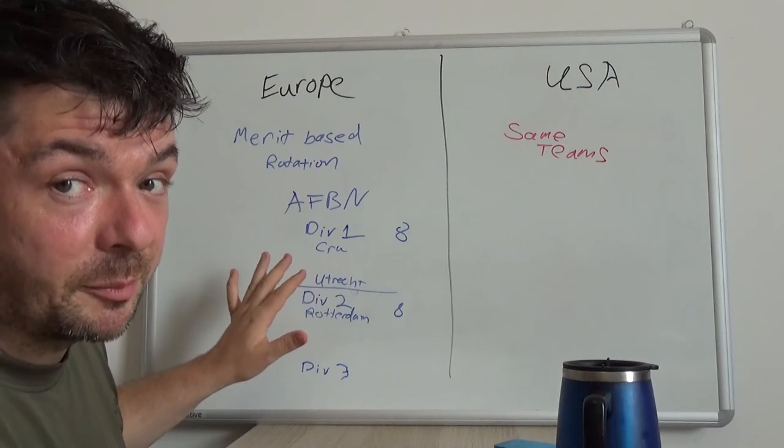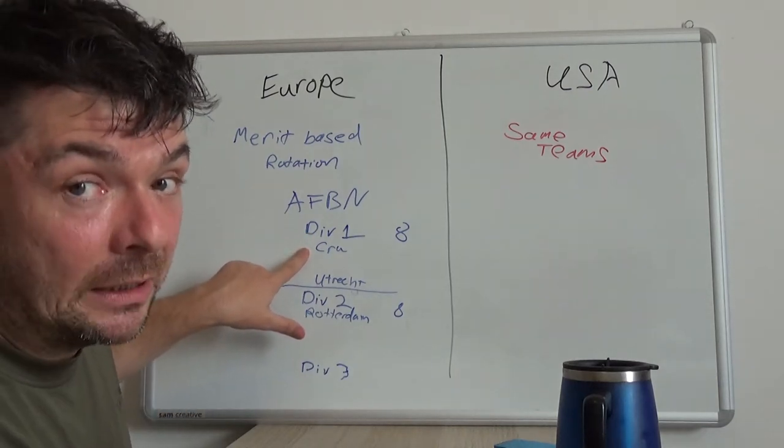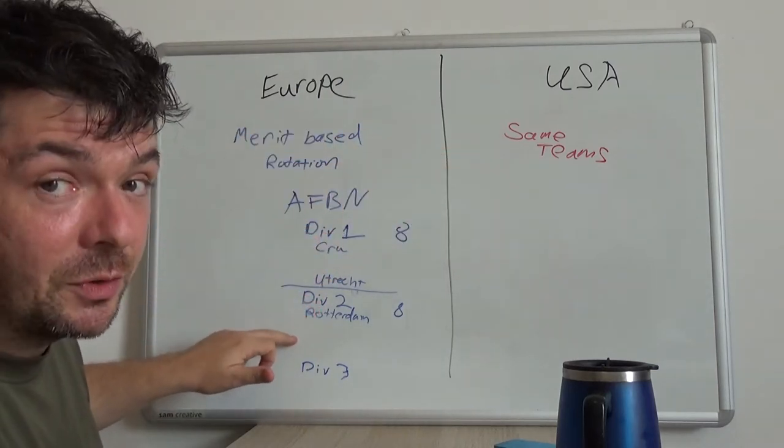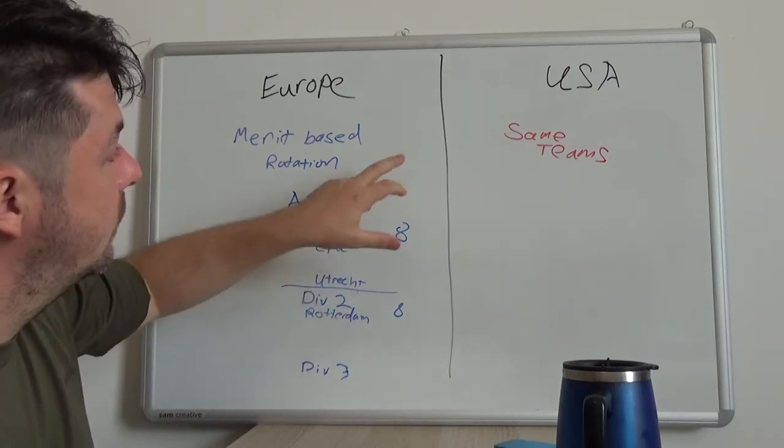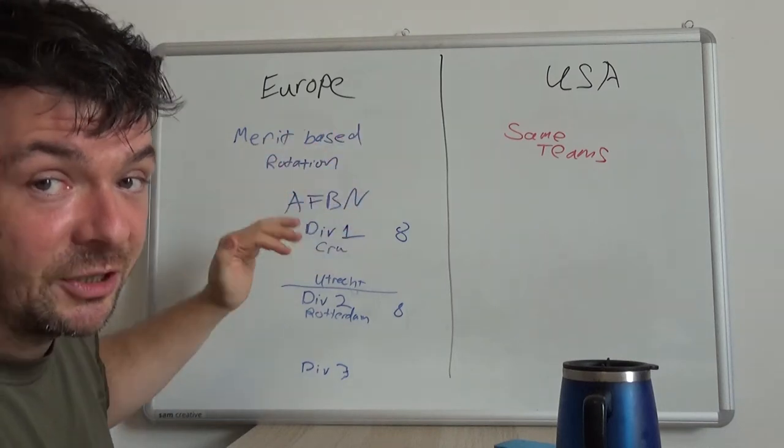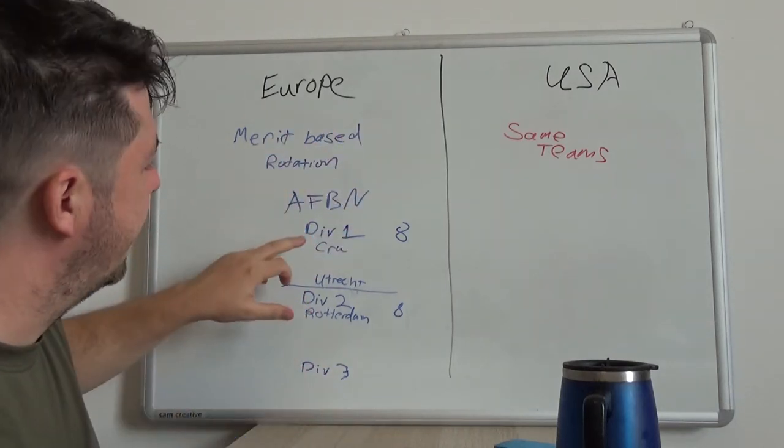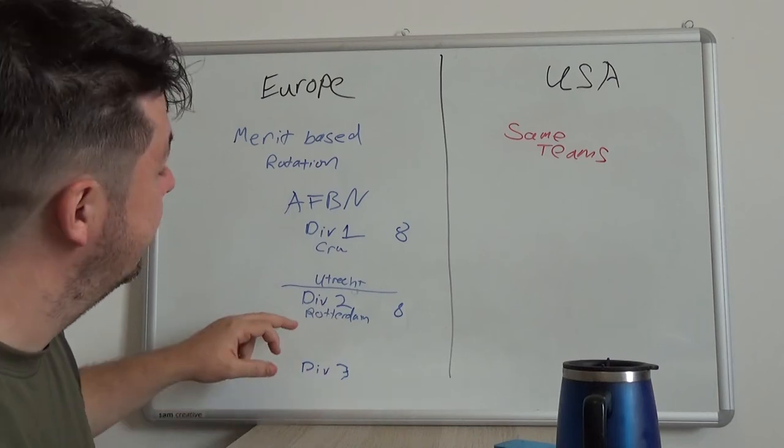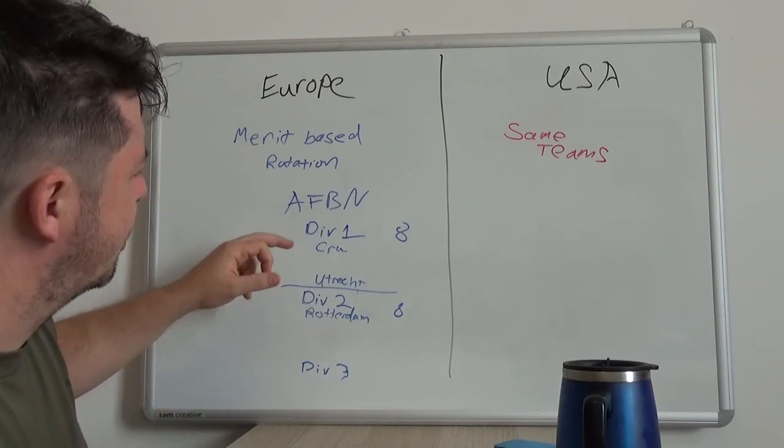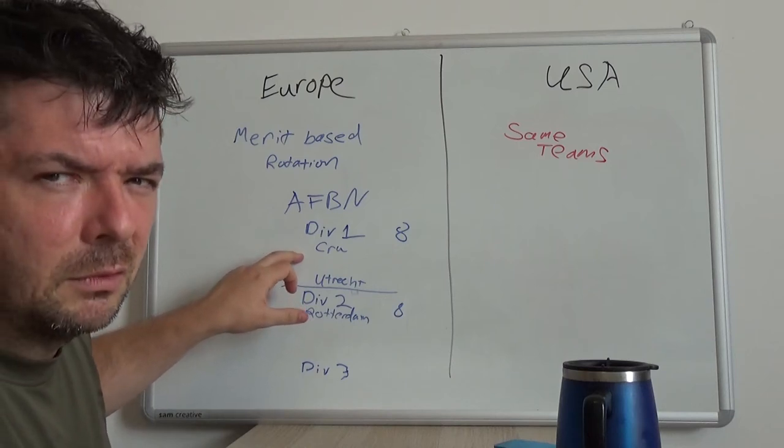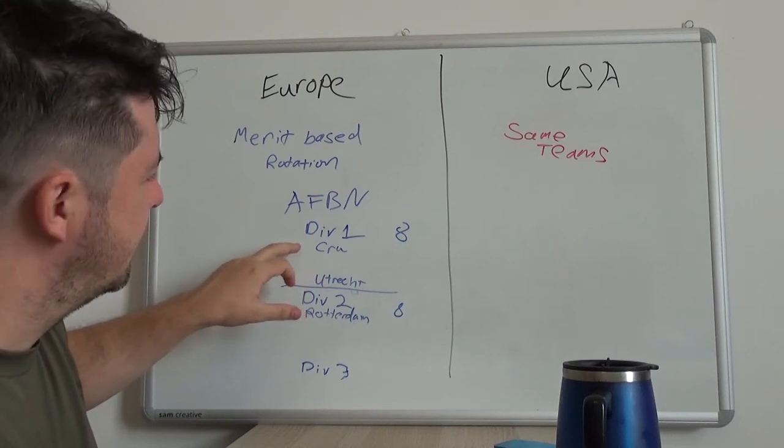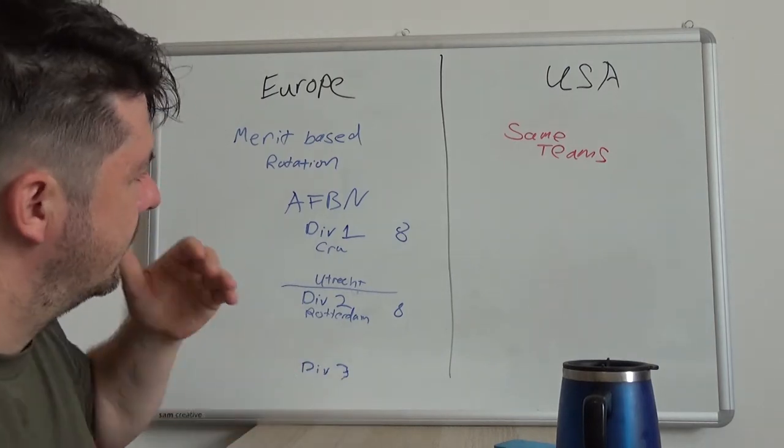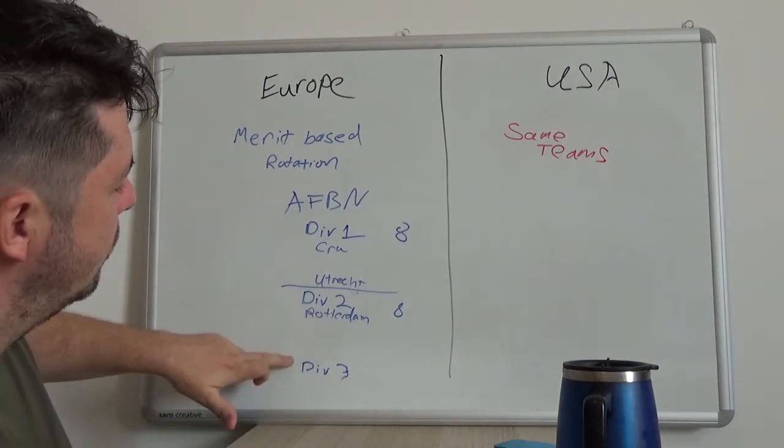The previous year, before I started playing here in the Netherlands, the Crusaders were not actually in division one. They were playing international games around Europe. So they had their second team crew two down in division two who wound up winning division two. But then the crew were basically getting their ass kicked around Europe and decided to come back to just the AFBN. There was a fight that crew one should go down to division two and start there because they're a new team to the league. But over time, if you do poorly, you will move down in ranks.